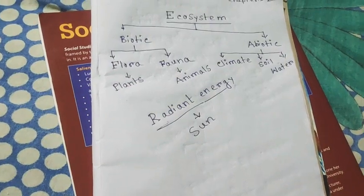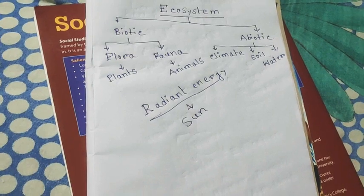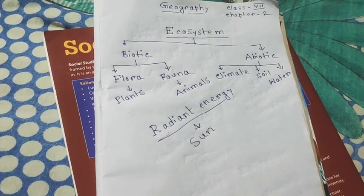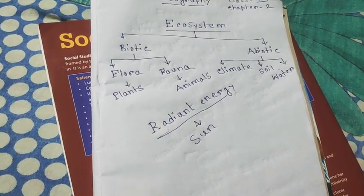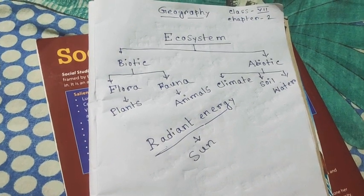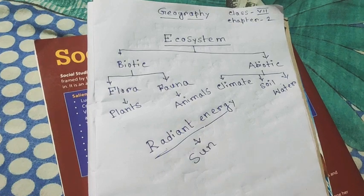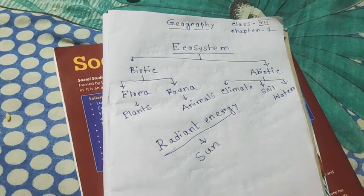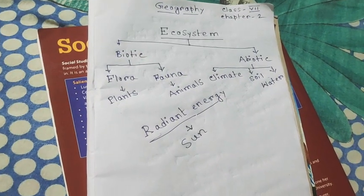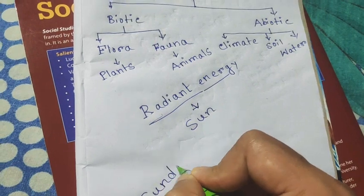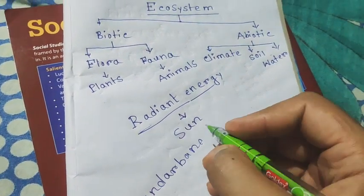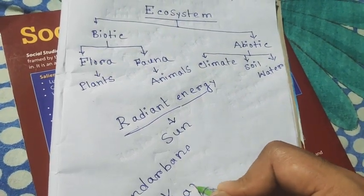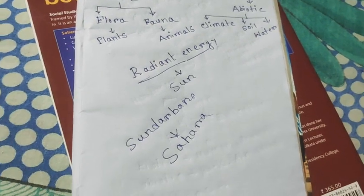Together, the autotrophs and heterotrophs form various trophic levels in the ecosystem. Ecosystems can be different in different regions of the earth, depending on the ecological and geological structure of that particular place. For example, the ecosystem of Sundarbans and the ecosystem of the Sahara desert will be different.